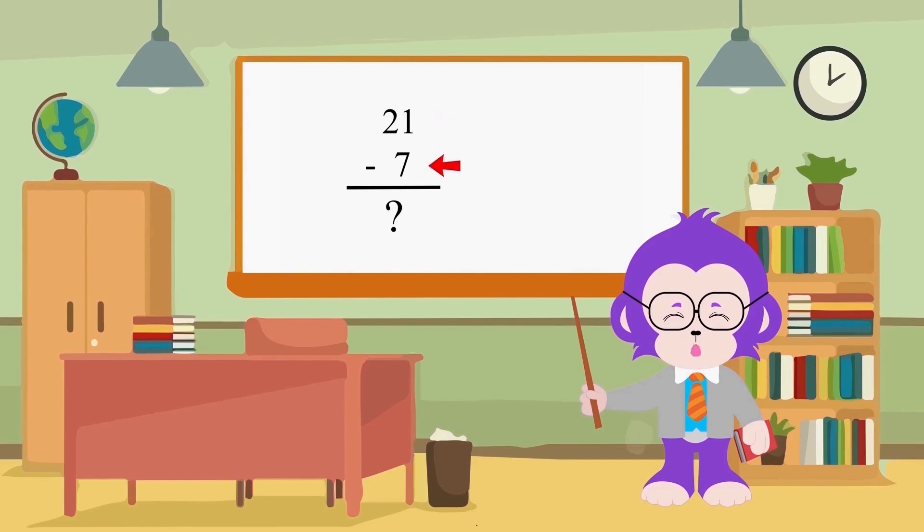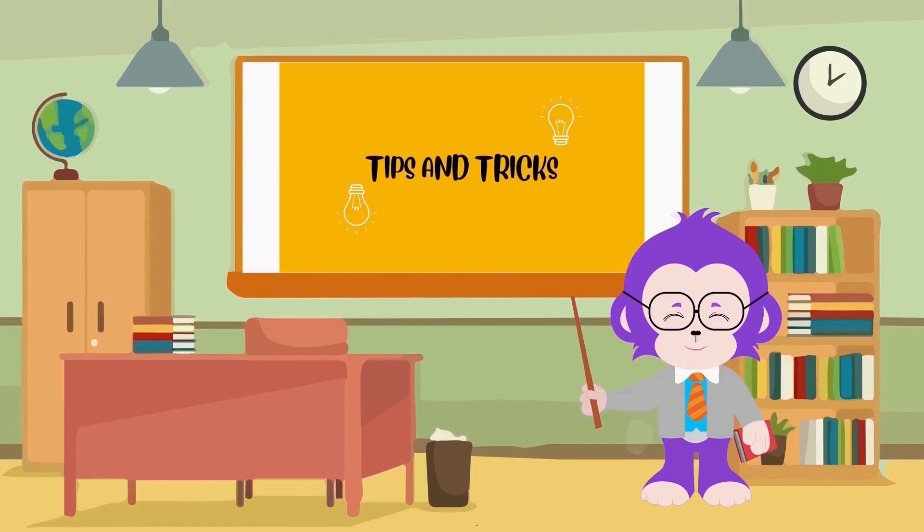As we see, the 1 is less than 7, so we need to take a borrow from the side number, that is 2. After taking the borrow, the number 1 becomes 11 and the number 2 becomes 1. Now we can draw 11 balls and then subtract 7 of them. The number of remaining balls is 4. The 1 directly drops down, and the answer now is 14.